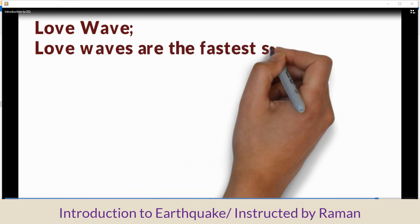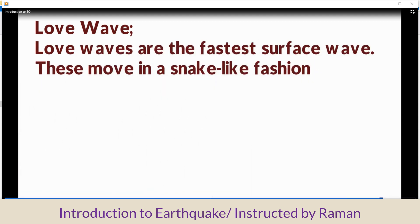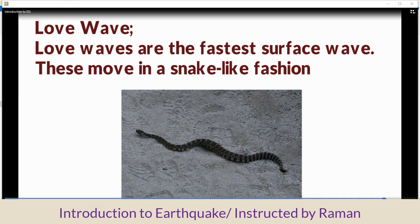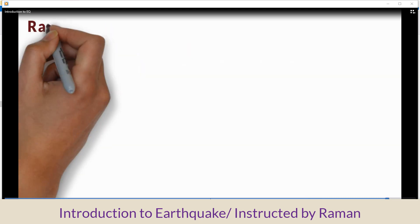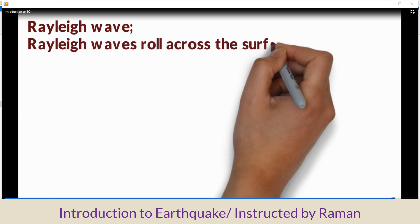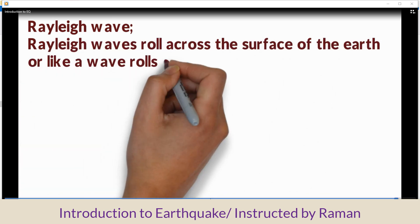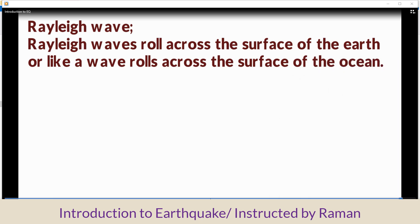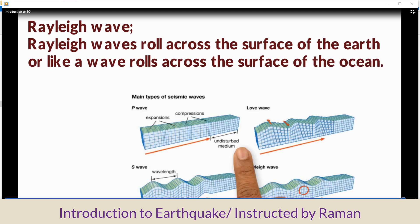Love wave is the fastest surface wave and moves in a snake-like fashion. Rayleigh waves roll across the surface of the earth, like a wave rolls across the surface of the ocean.